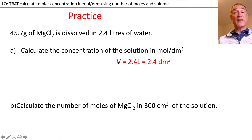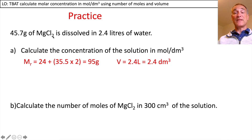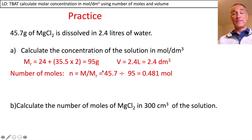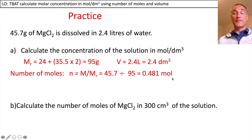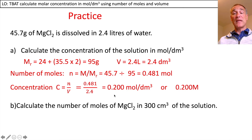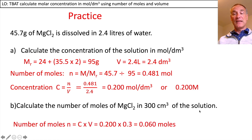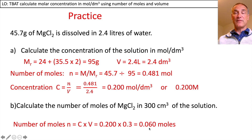To calculate the concentration, first change the volume from litres into decimetres cubed — a litre is a thousand centimetres cubed, which is a decimetre cubed. The molar mass of magnesium chloride is 24 plus 2 times 35.5 for chlorine, giving 95 grams. So the number of moles is 45.7 divided by 95, which is 0.481 moles. The concentration is 0.481 divided by the volume, giving 0.2 moles per decimetre cubed, or 0.2 molar. The number of moles in 300 centimetres cubed is concentration times volume, giving 0.06 moles.